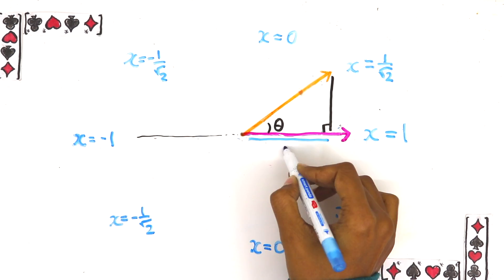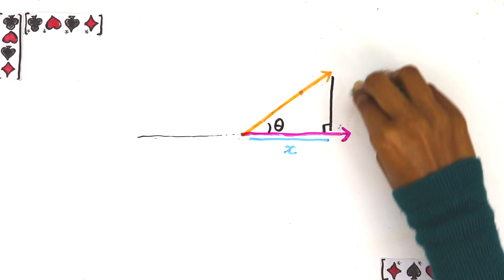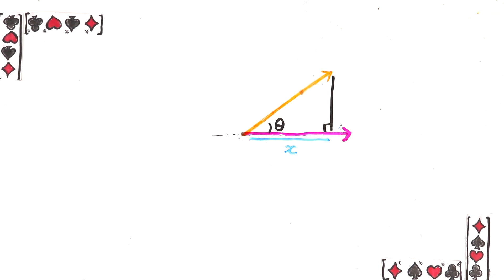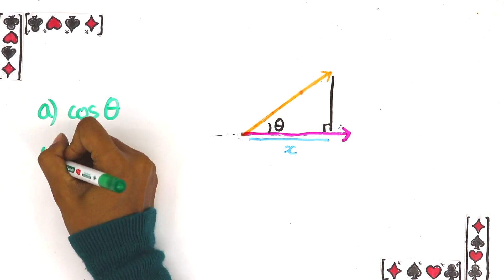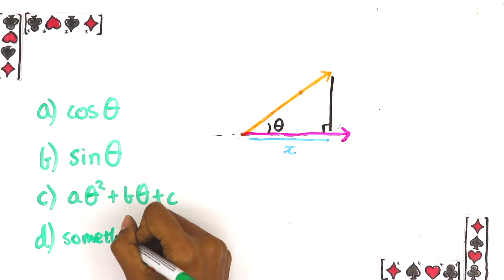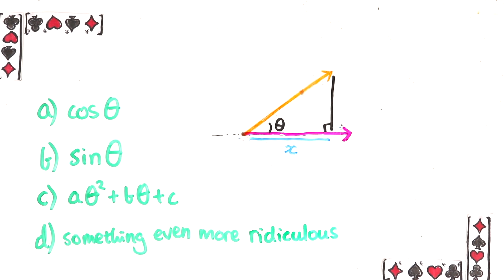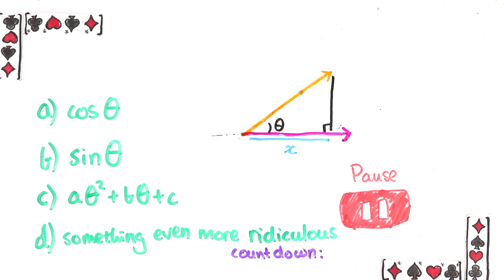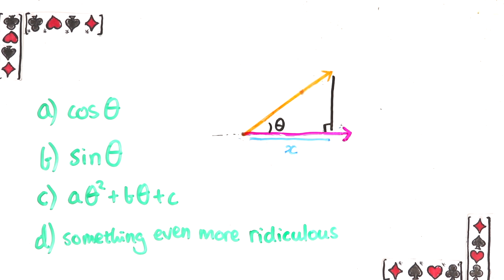But okay the trig is not so bad so I want you to figure out which of these trig formulas is the number x in terms of the angle theta between a and b. Pause the video and figure it out. Hopefully you guys remembered something from those many hours in class talking about right angle triangles and figured out that the answer is cos theta.